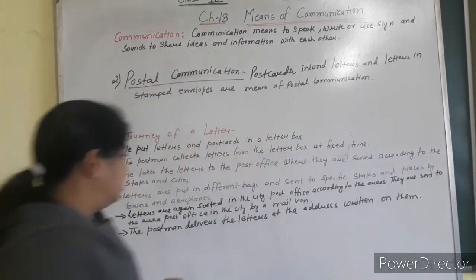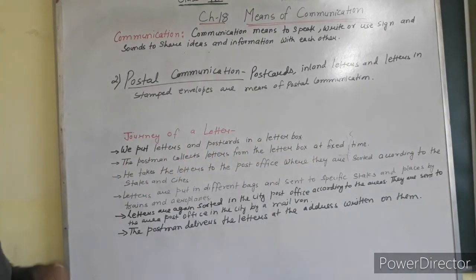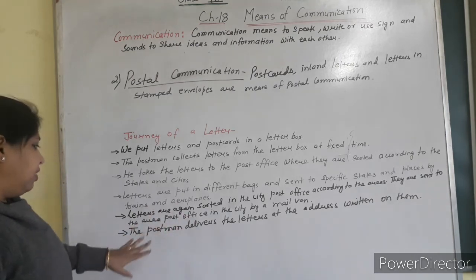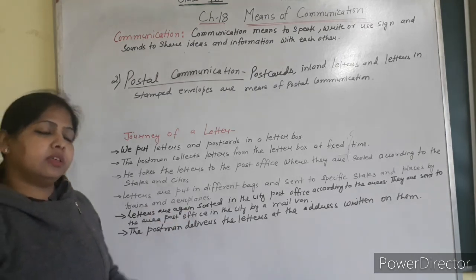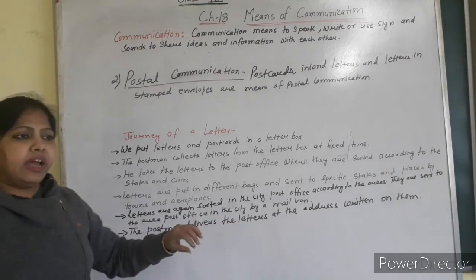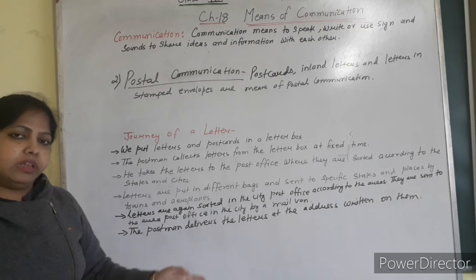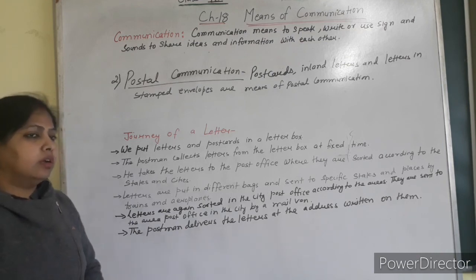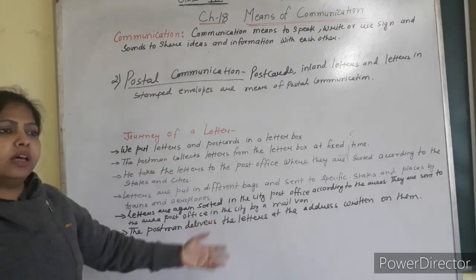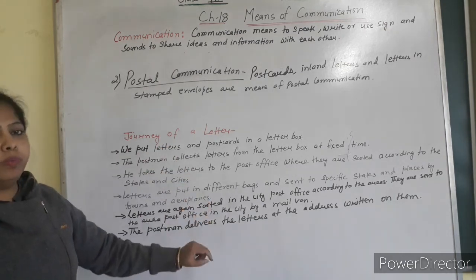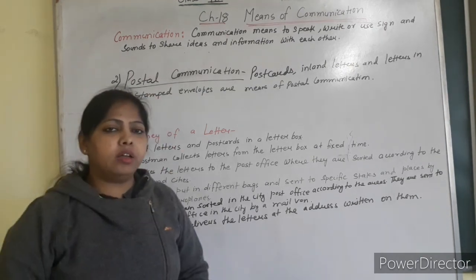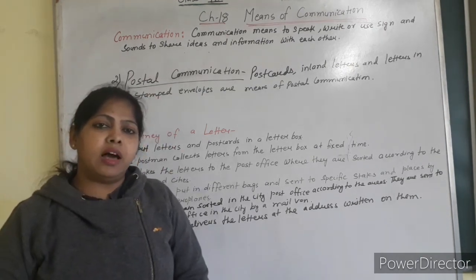When the letters are sent to the area post office in the city by the mailman, the postman then delivers the letters at the address written on them. Whatever address is written on the letters, they are delivered to that particular person. This is how the letters reach the respective person. Hope all of you understood. Thank you.